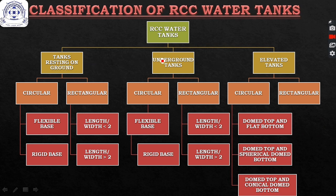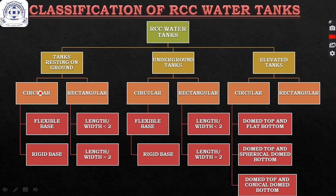RCC water tanks can be of three types depending on their location: resting on ground, underground, or elevated (overhead). Each type can be of different shapes — tanks resting on ground can be circular or rectangular, as can underground tanks, and similarly for overhead tanks.